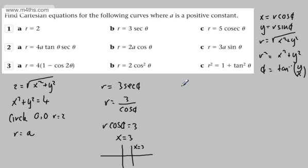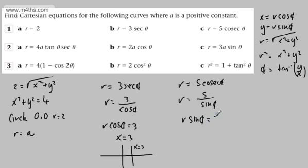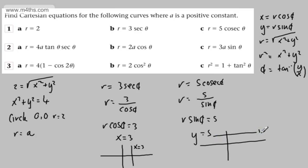For the next one, r equals 5 cosec theta, so r equals 5 over sin theta. Multiplying both sides by sin theta gives r sin theta equals 5. Since r sin theta is y, we get y equals 5 — a horizontal line.